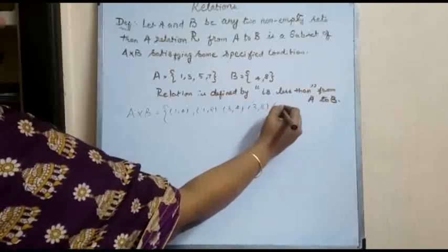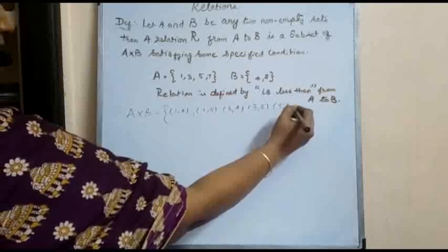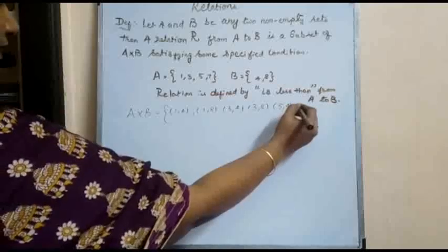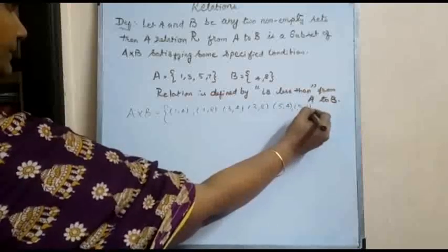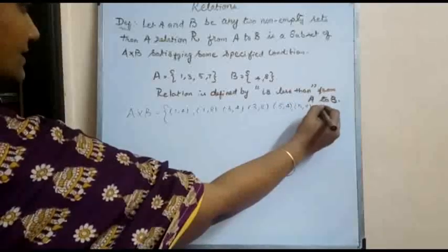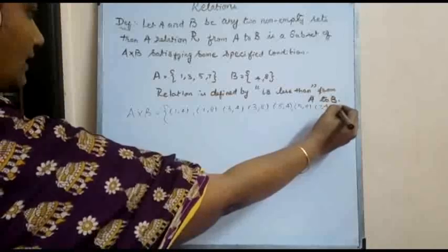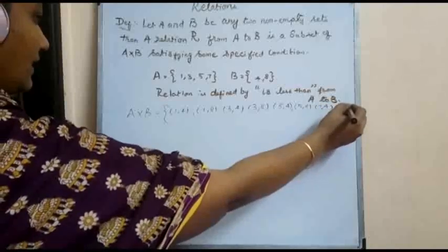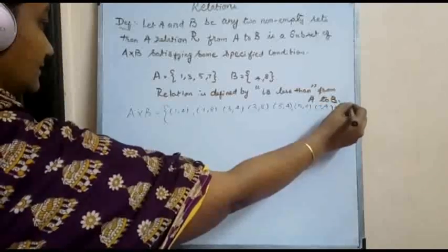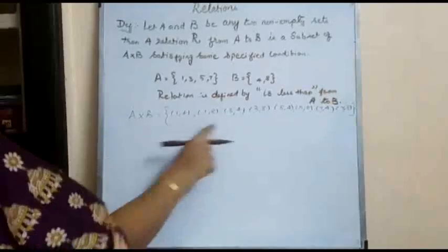...continuing A cross B: (5,4), (5,8), (7,4), and (7,8). So this is A cross B.